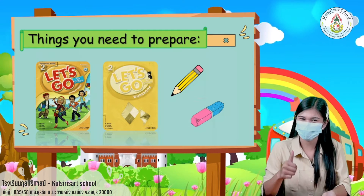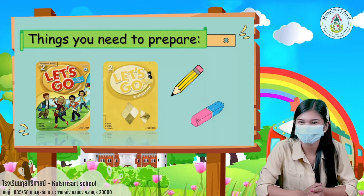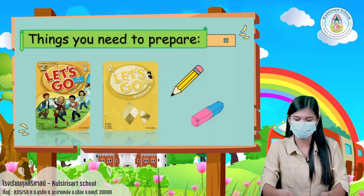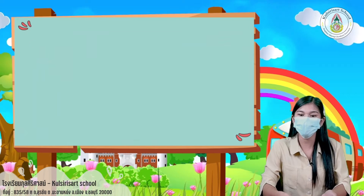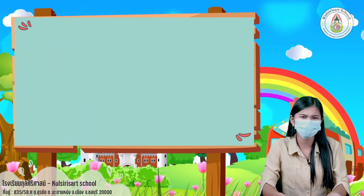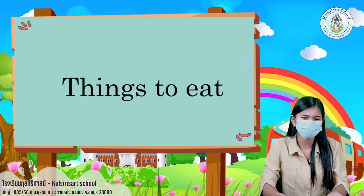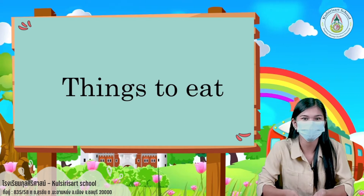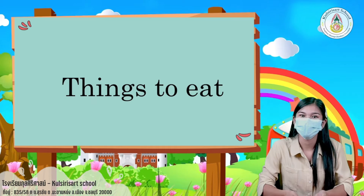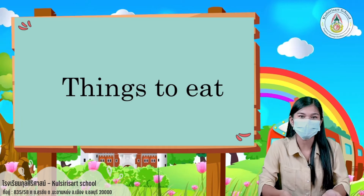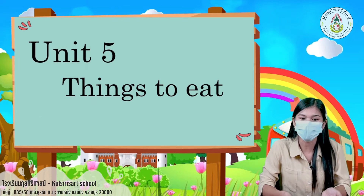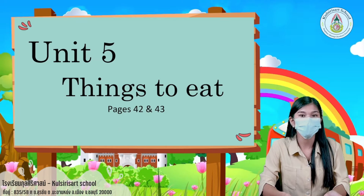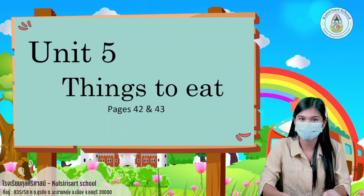Is that clear to you kids? Alright, so today we are going to talk about things to eat. You can find this in Unit 5 on pages 42 and 43.